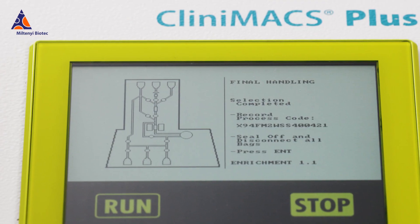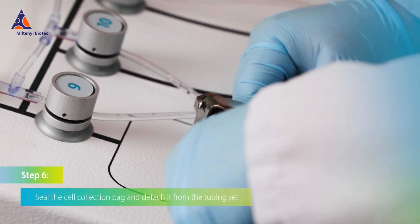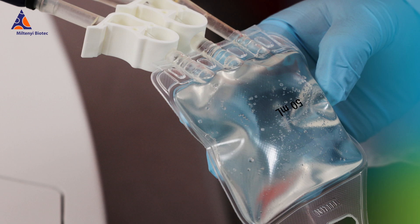Once your run is complete, follow the instructions on the screen and detach your cell collection bag from the tubing set. Now you have your purified target cell population.